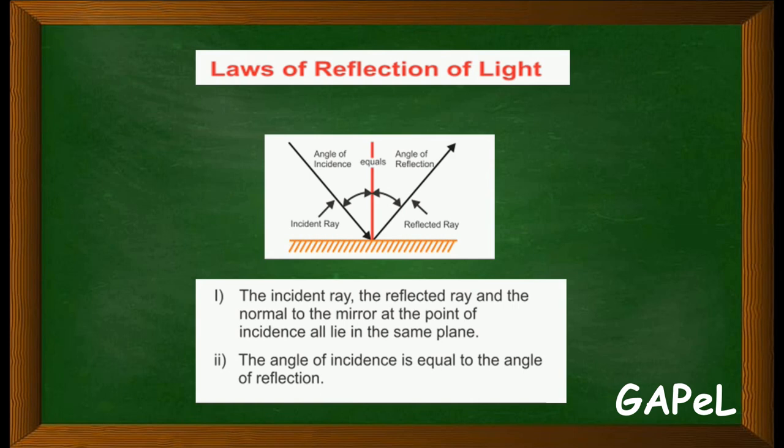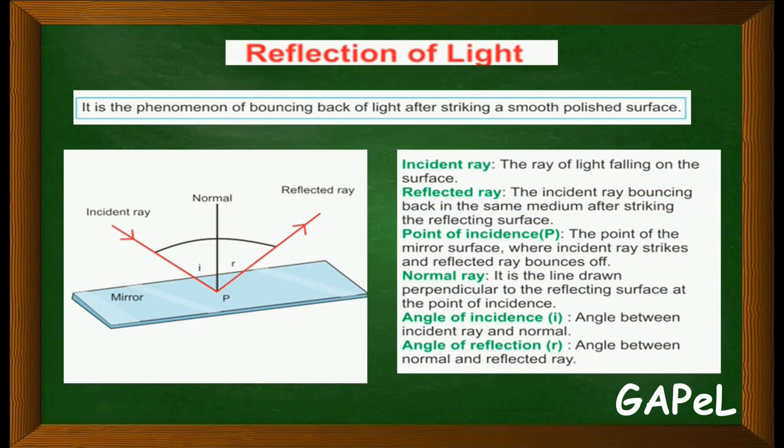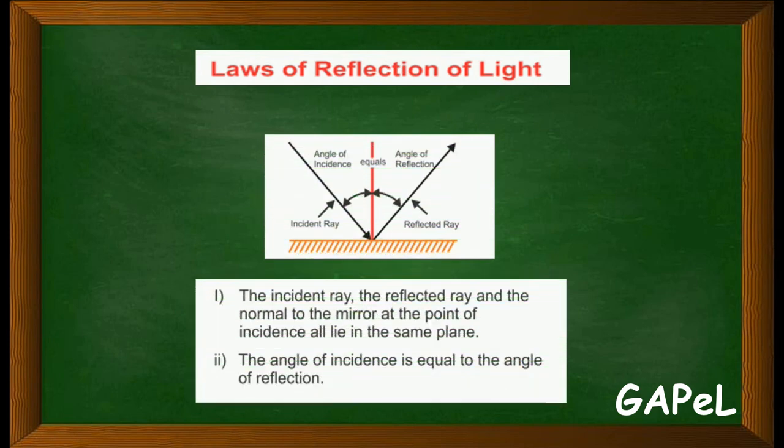All lie in the same plane - the second point: the angle of incidence is equal to the angle of reflection. Clear? Any doubt till here? So, what is reflection of light, the properties, incident ray, reflected ray, point of incidence, normal, angle of incidence, angle of reflection. And then we discussed about the laws of reflection. Clear? So if you have understood till here, we'll move to the next part.